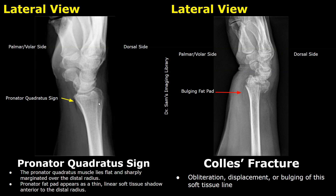Here is another example of the pronator quadratus sign. In normal cases we see a dark, linear, soft tissue shadow anterior to the radius, whereas in Collis fracture this line is bulging and somewhat brighter than the normal one. This line will be seen at the palmar aspect of the hand.